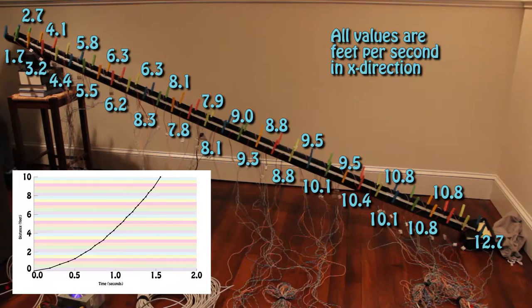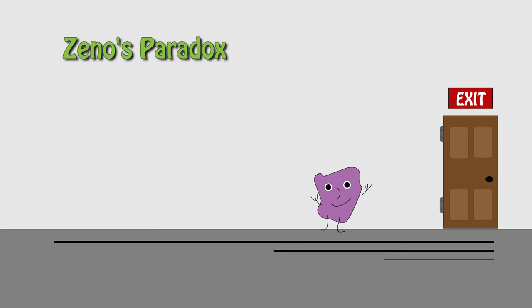If you tried to exit a room by halving your distance to the door, you'd spend your whole life getting closer and closer, but never leaving. We can look at this graphically.